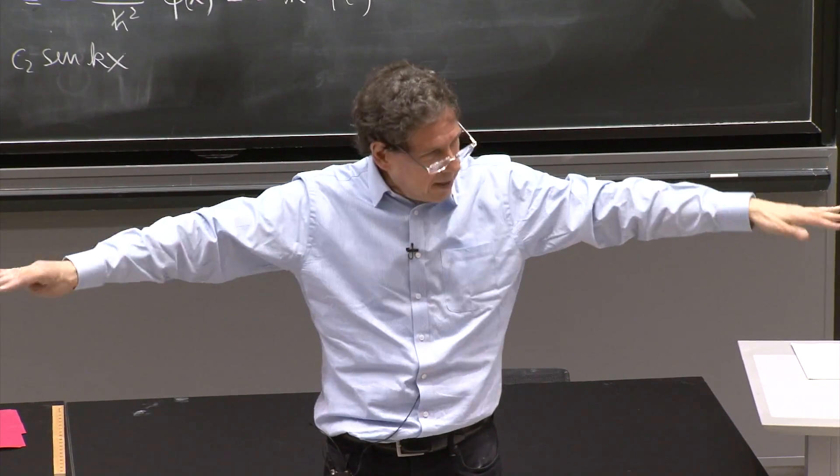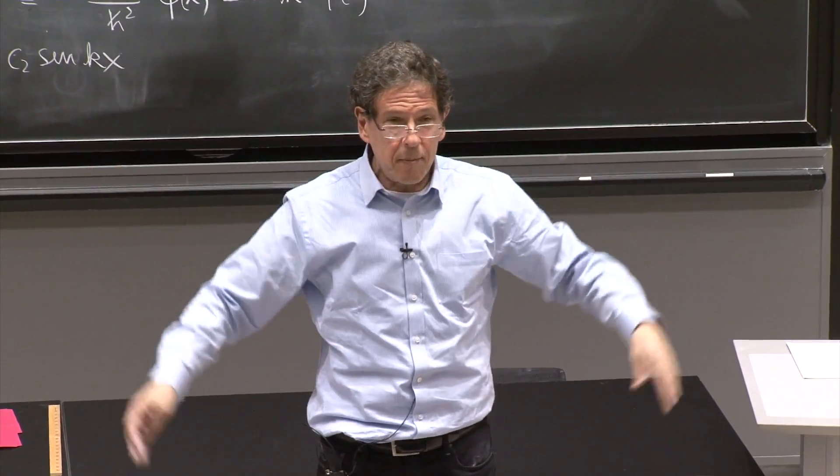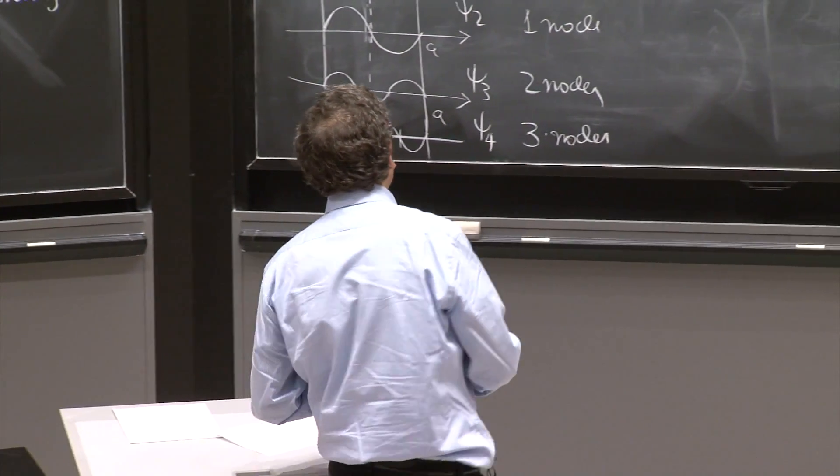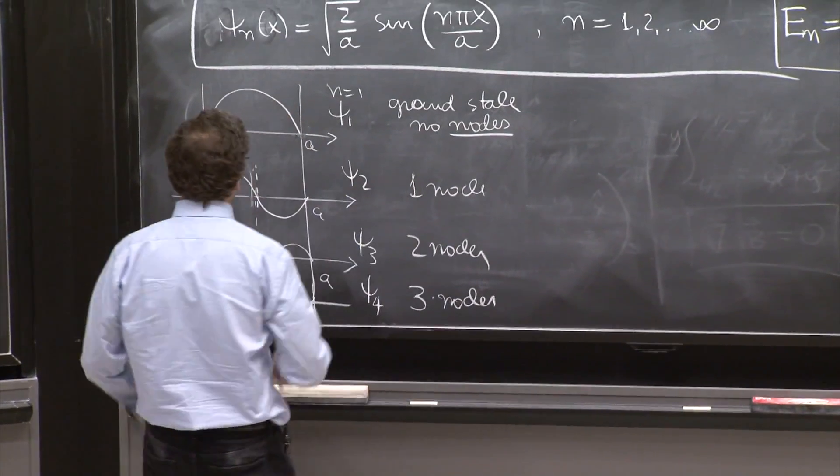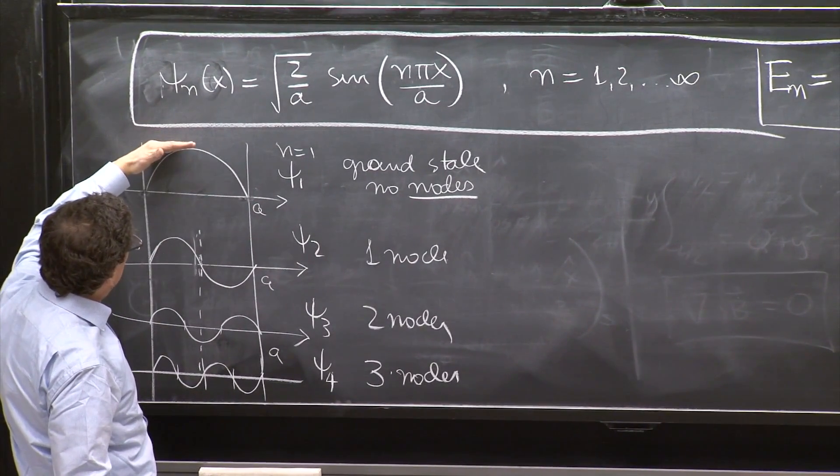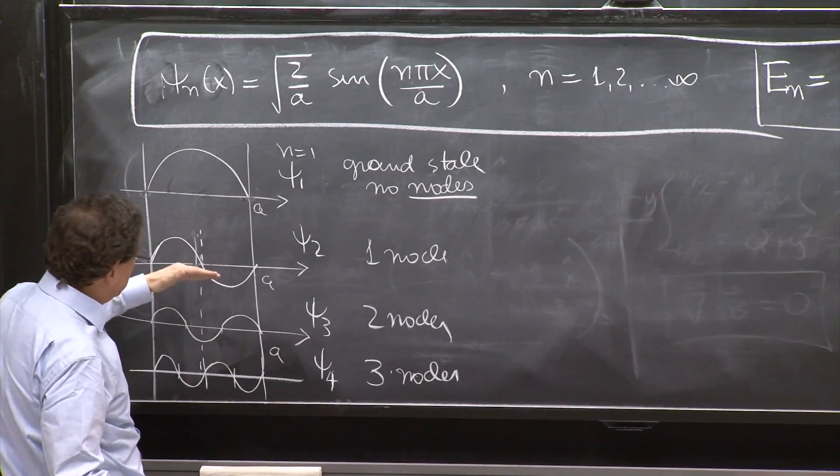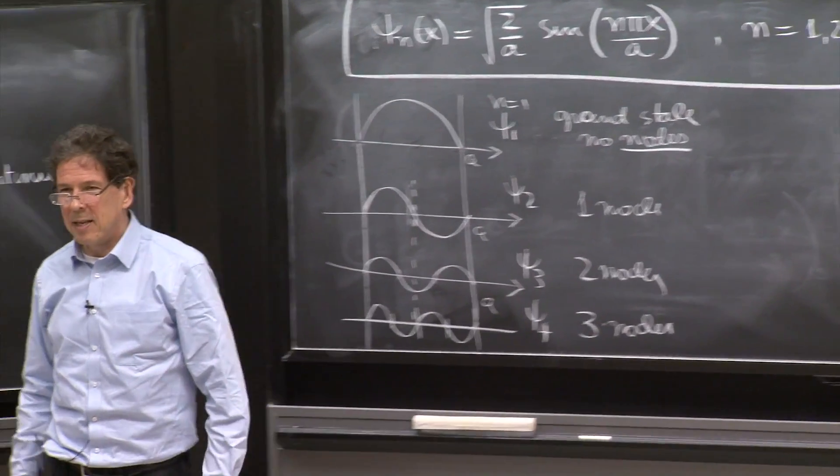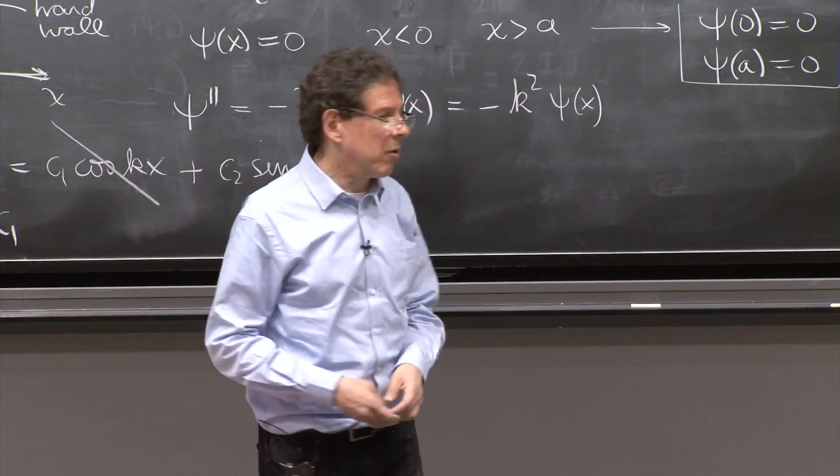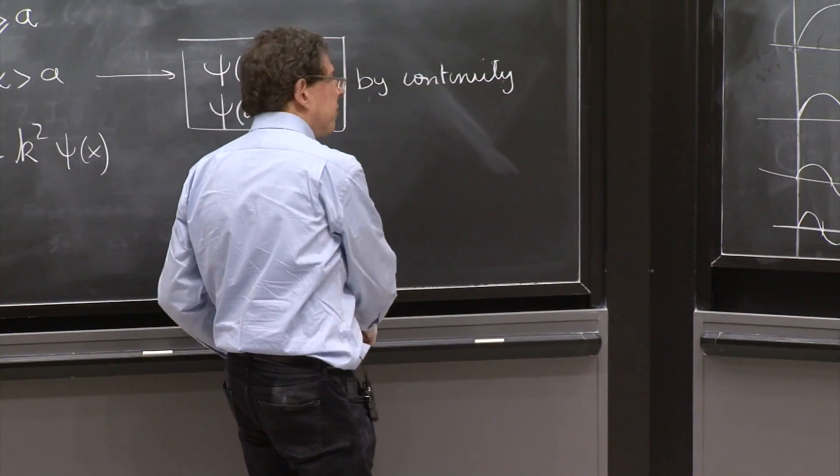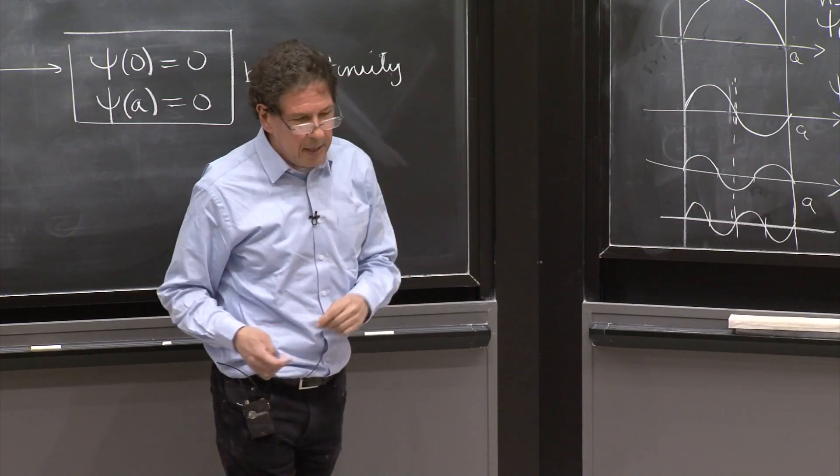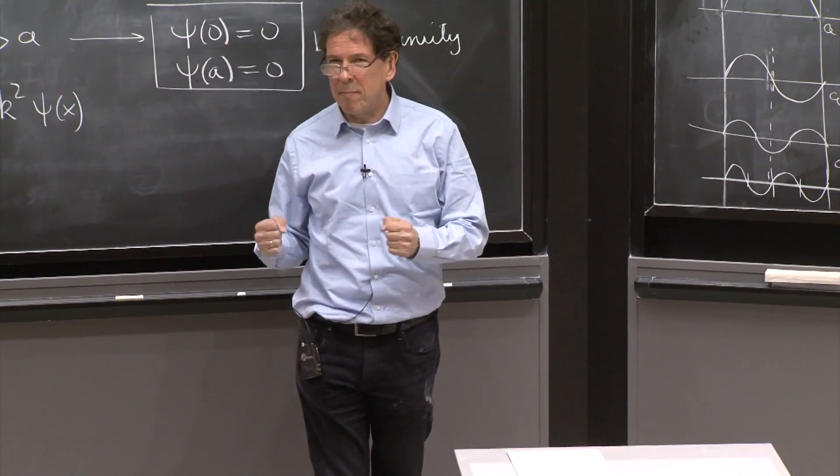Bound states are states that are normalizable, so they decay at infinity. You see, a state that is not normalizable, like a plane wave, is not a bound state. It exists all over. And it's a general theorem that these things, these one-dimensional potentials, whenever you have bound states, the number of nodes increases with the energy of the eigenstate. We will see a lot of evidence for this as we move along the course, and a little bit of a proof, not a very rigorous proof.